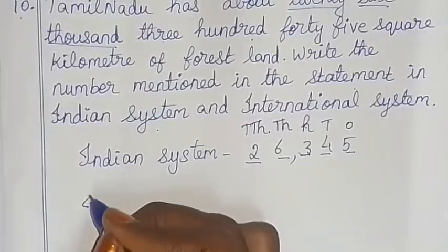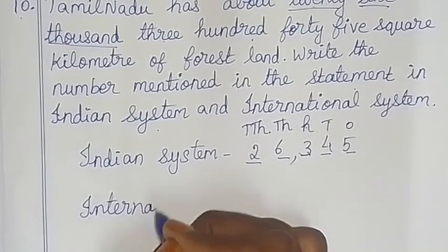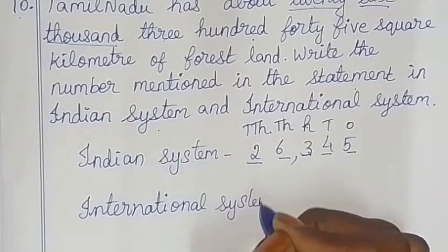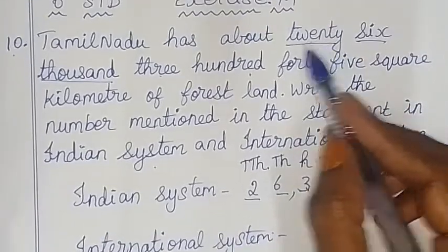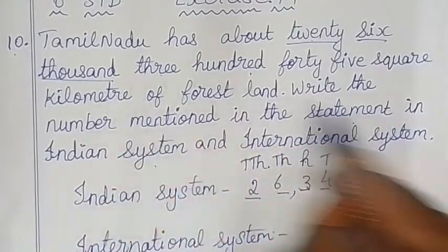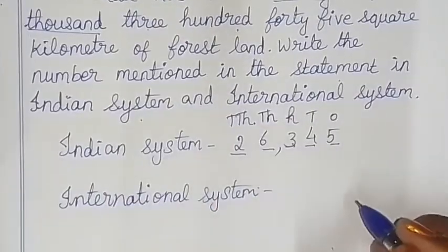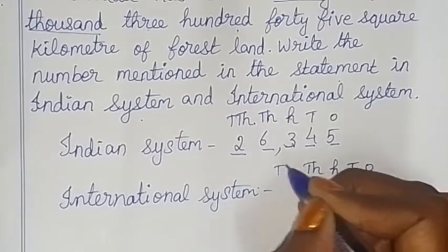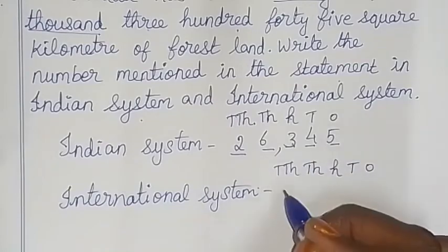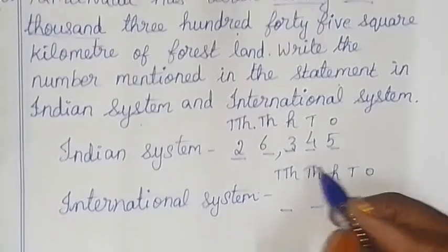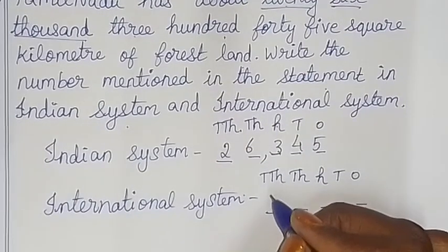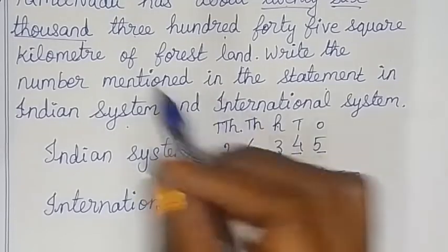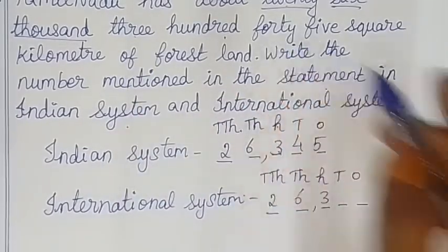Now we have to check the international system. In the international system, we start with the place value order: 1, 10, 100, 1,000, 10,000. We check where the comma goes — between 10,000 and 1,000. So the number is written as 26,345 in the international system as well.